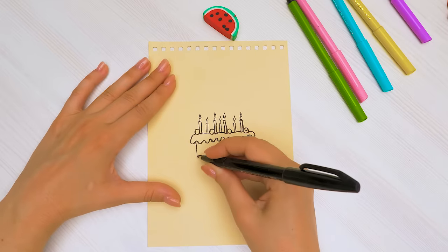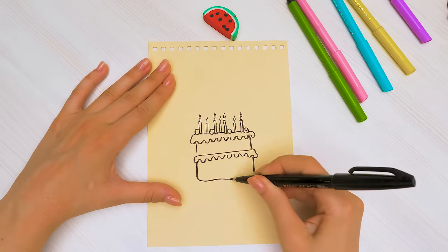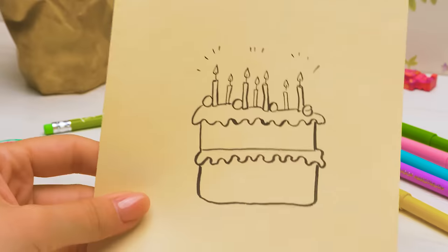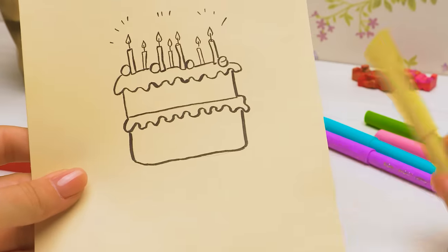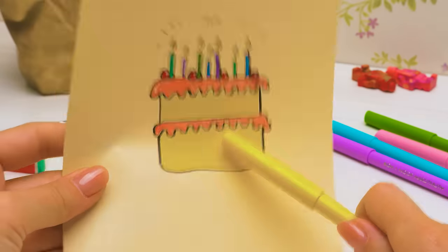Let's make our cake double layered, like Sammy likes it. Done! If you want, you can color this cake in the most delicious colors.